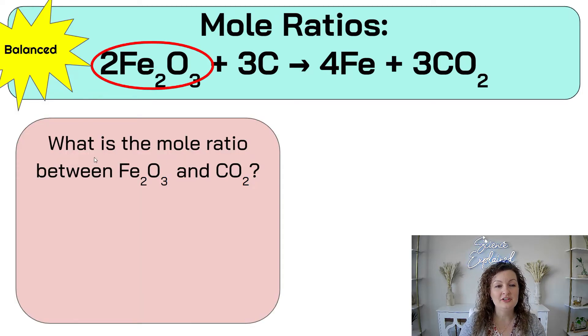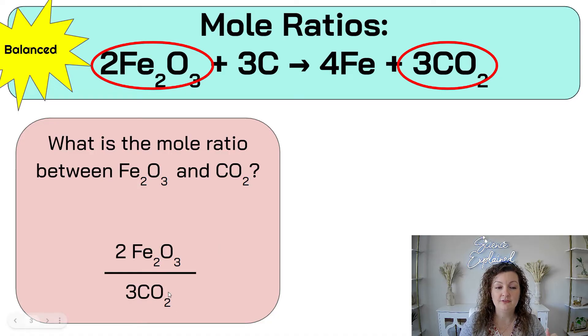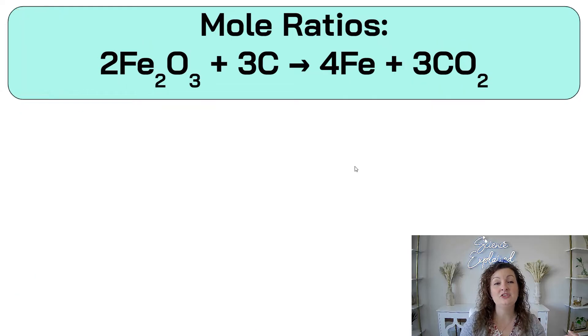So if you look at this chemical equation, this one is balanced, and we can double check by just counting our atoms. So 2 times 2 gives us 4 iron, we have 4 iron on our product side. 2 times the 3 gives us 6 oxygen on reactant, and then the 3 times the 2 is 6 oxygen on our product side. And then we have 3 carbon and 3 carbon. So this is a balanced equation. Now we can look at our mole ratios.